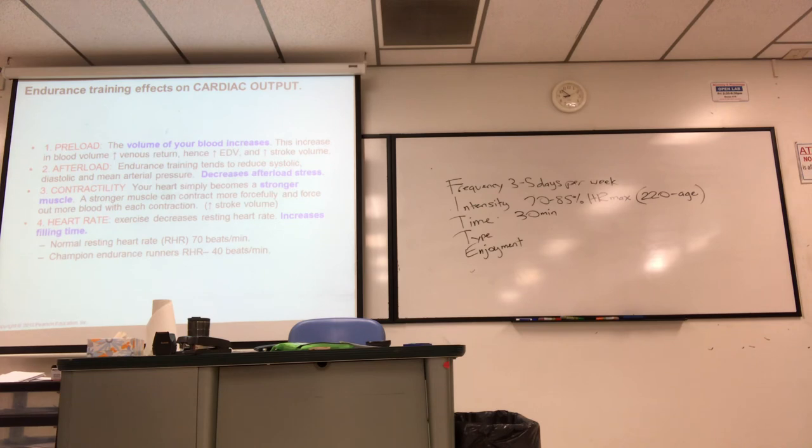Here are the endurance training effects on exercise. Preload. Exercise increases the volume of your blood. Therefore, more is circulating. You're going to have more venous return, more EDV, more stroke volume. Afterload. Endurance training tends to reduce blood pressure. A mechanism unknown. I'm not sure why. It does. Contractility. Your heart simply becomes a stronger muscle. A stronger muscle can contract more forcefully and pump more blood out. And I should mention that exercise is a remarkable stress on the body. Typically, exercise should be prescribed by a doctor like pharmaceutical drugs. So I don't want you to go home and I heard this lecture and go tell grandma to go hit the track and they die and I get blamed for it. Nothing like that. Exercise should be prescribed.